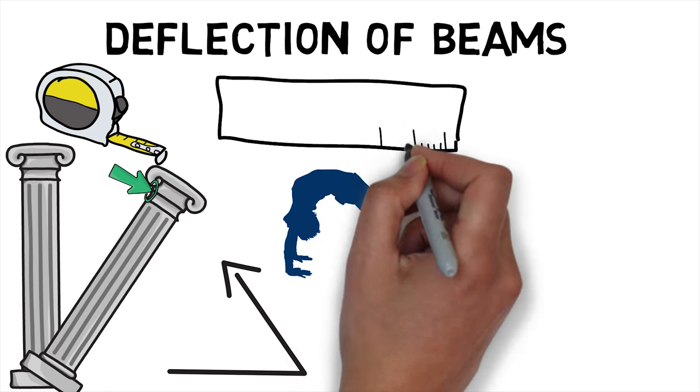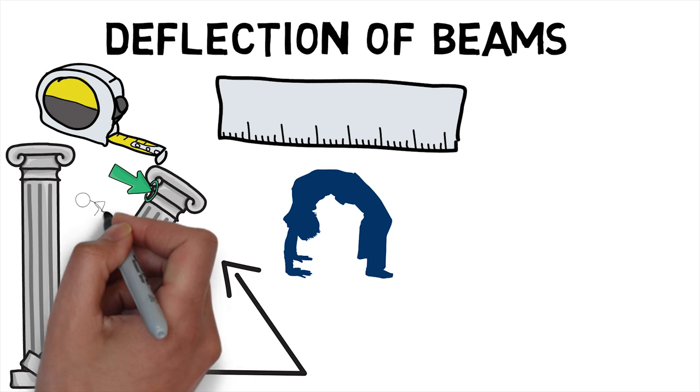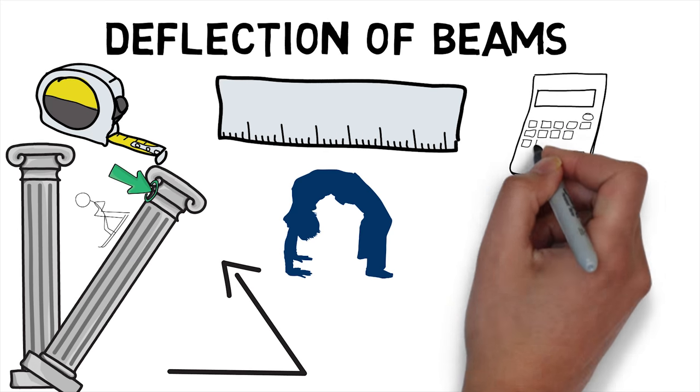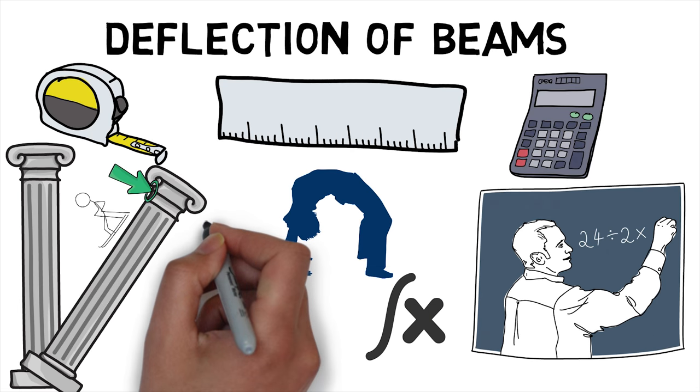The deflection distance of a member under a load is directly related to the slope of the deflected shape of the member under that load and can be calculated by integrating the function that mathematically describes the slope of the member under that load.